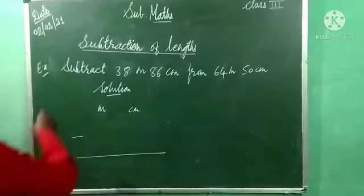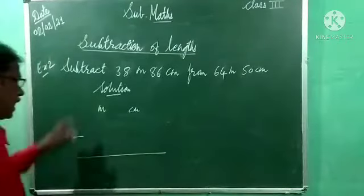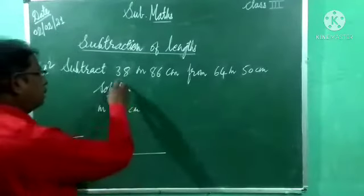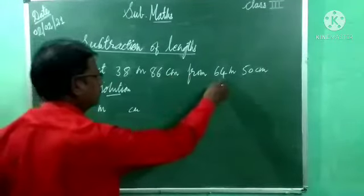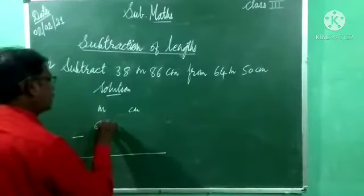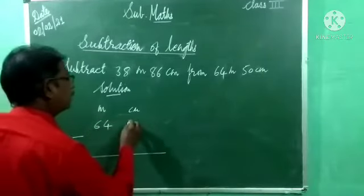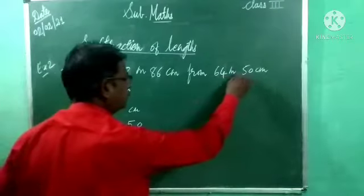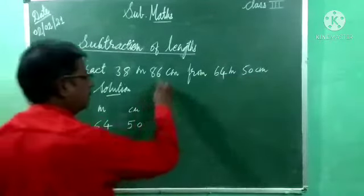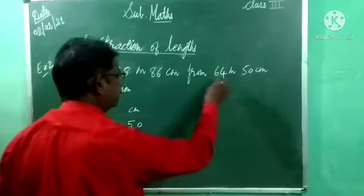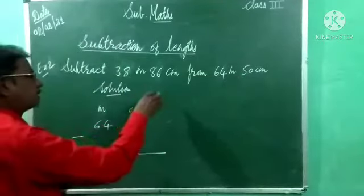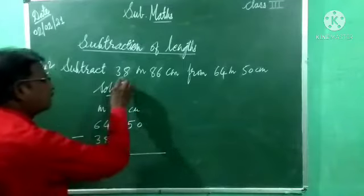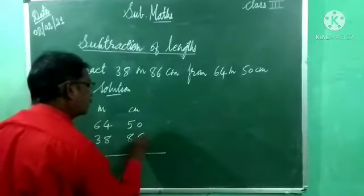Now example number second. Subtract 38 meter 86 centimeter from 64 meter 50 centimeter. Now which number is bigger? 38 or 64? 64. So at first we have to write 64 and here 50. Don't think among these two which number is bigger, don't change that one. So meter.